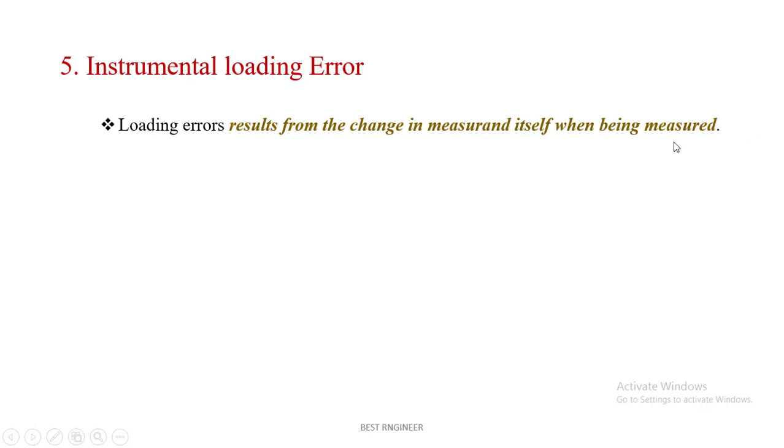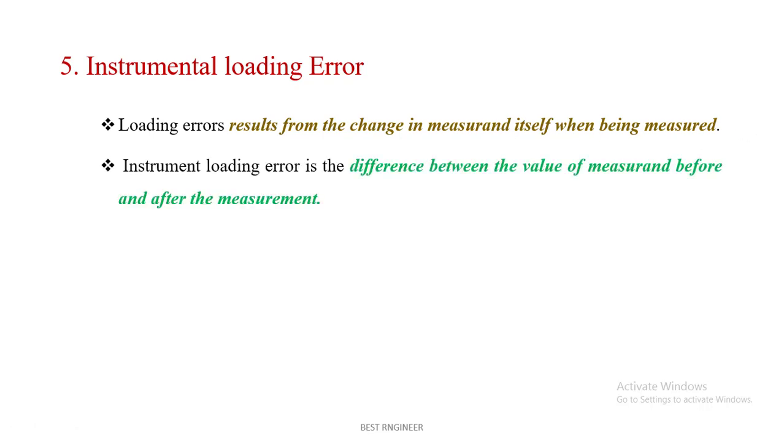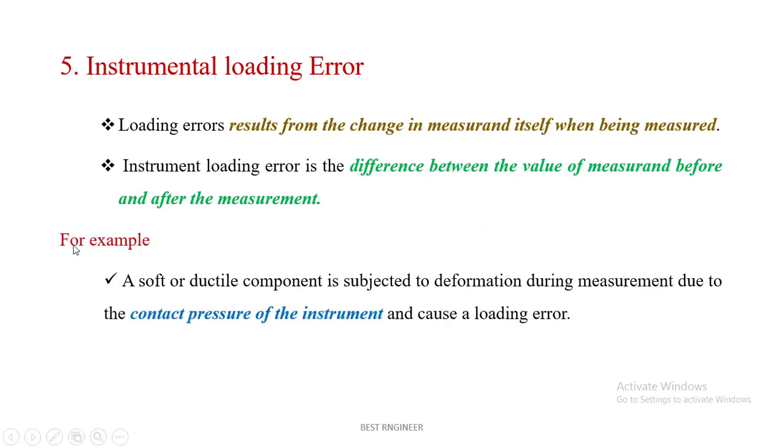The difference between the value of measurement before and after measurement, this is called instrumental loading error. For example, a soft or ductile component is subjected to deformation during the measurement due to the contact pressure of the instrument and causes a loading error. The effect of this error is unavoidable.